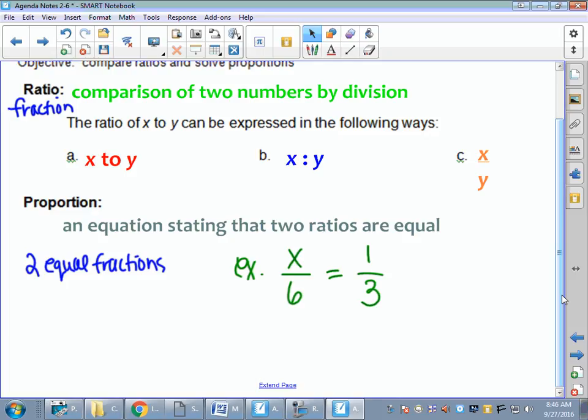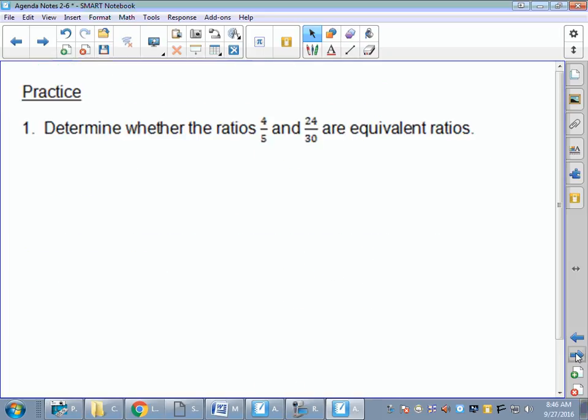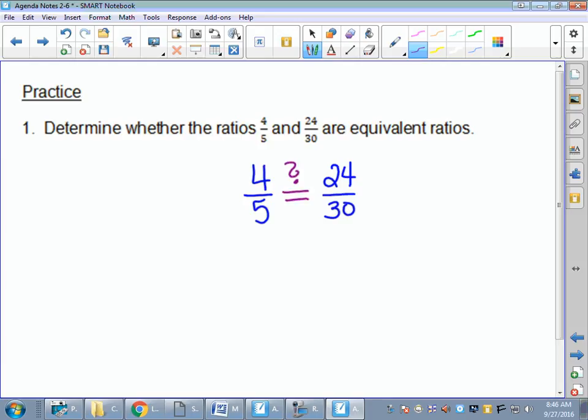But first, we're going to look at are they actually equivalent ratios? Practice number one says determine whether the ratios are equivalent. So basically, I'm taking 4 fifths and 24 over 30, putting an equal sign with a question mark. Are they equal? You've got two options. One, you could simplify. Or two, you could cross multiply.